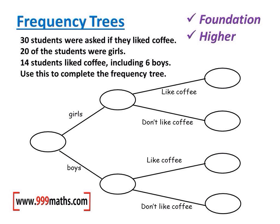In this video on frequency trees, we're told that 30 people are asked if they like coffee. That means at each stage in the tree it will add up to 30 — so this stage will be 30, these two will add up to 30, and these four will add up to 30.